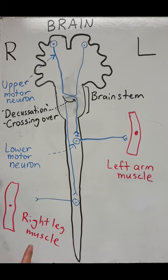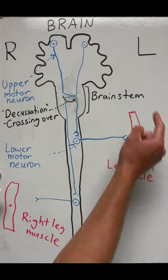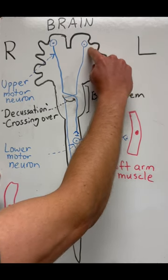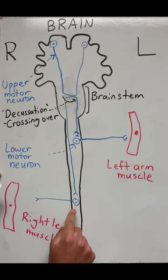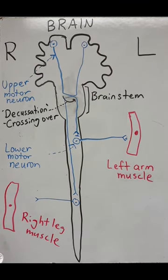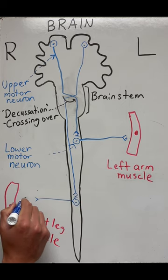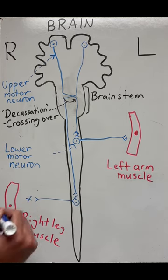And the same holds true if you want to control the right side of your body. A motor neuron originating in the left side of the brain's cortex will send its signal and cross over at the brain stem, go all the way down, hit a lower motor neuron, stimulate it to send its signal to the right leg muscle and then contract that muscle.